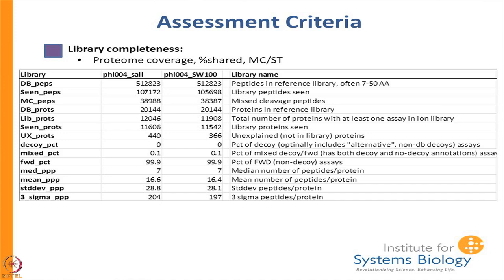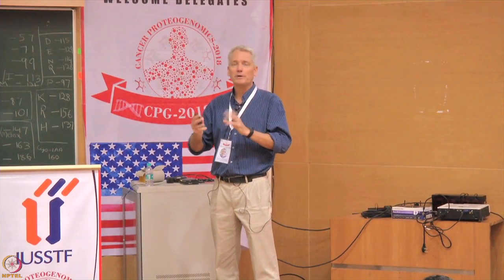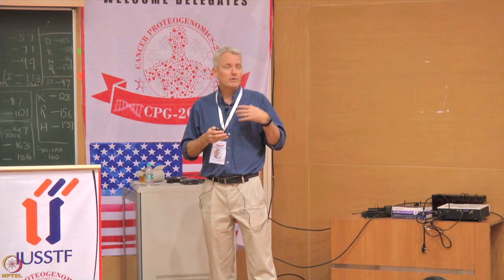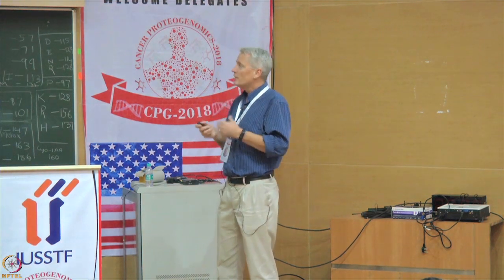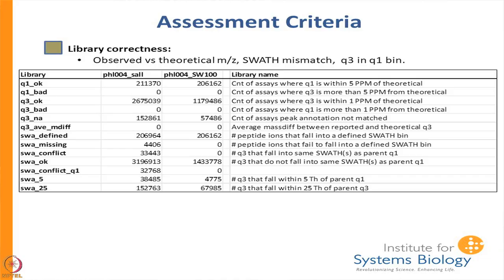One interesting thing is the average number of peptides per protein is 7, but the median is like 17. It turns out the PHL is over-represented for some proteins — up to 100 peptides for a single protein, including semi-tryptic or miscleaved peptides. Normally for SRM you would not want to use those peptides; you would want the best representative ones for each protein. So one thing to do with the PHL is narrow it down a little bit.